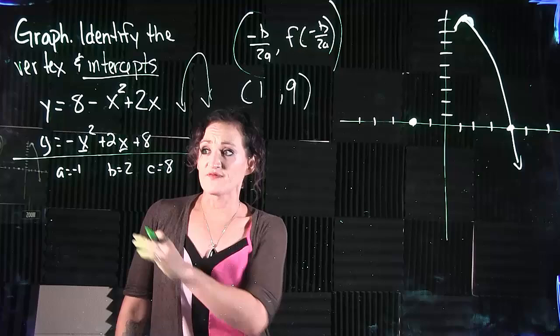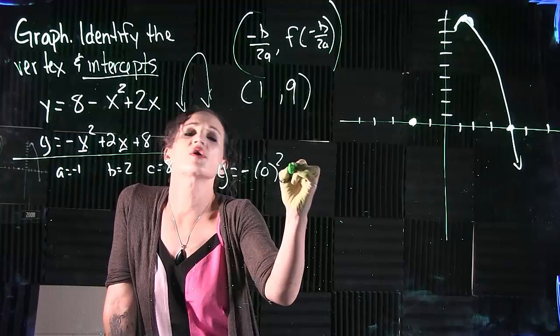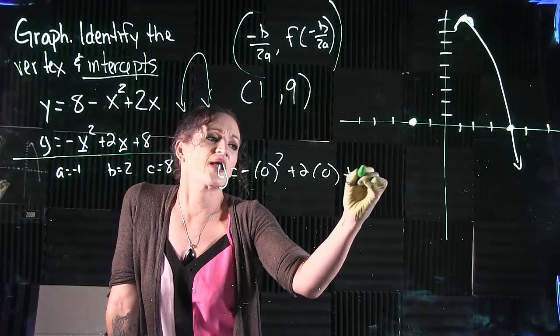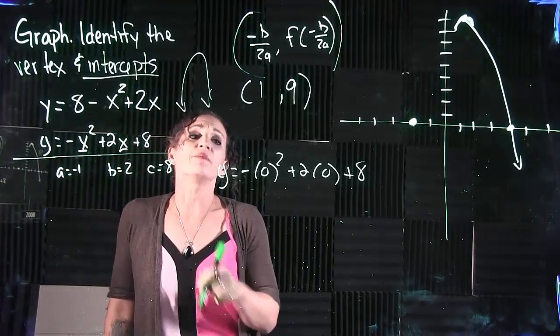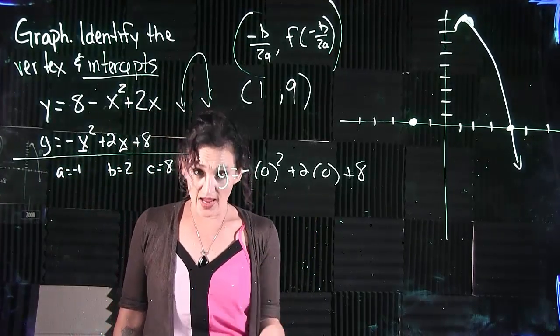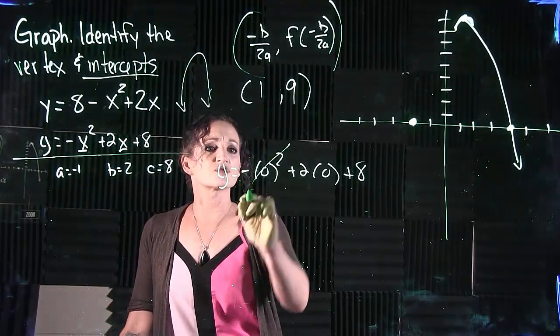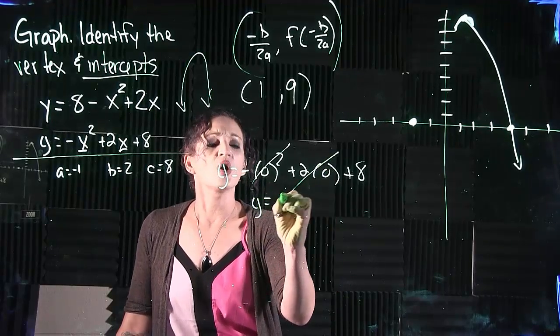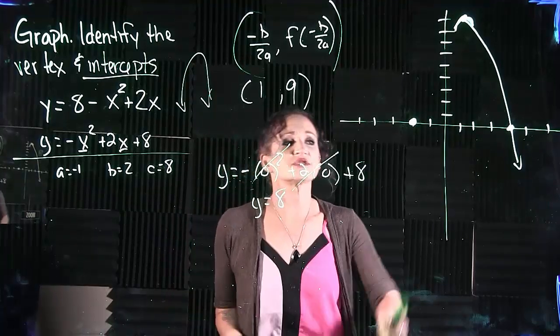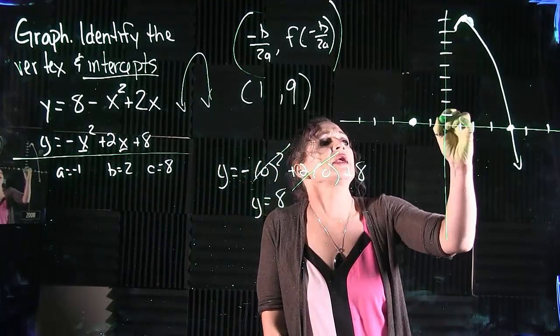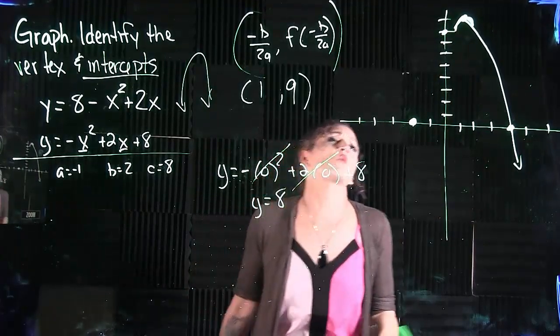In order to find the y-intercept of any function, you want to go ahead and plug in 0 for your x values. So I'm going to go ahead again and use this version of our equation, plug in 0 for x and you should get your y-intercept. So whenever we plug in 0, well 0 squared is 0, 2 times 0 is 0, so we are left with y is equal to 8, which means a positive 8 is our y-intercept. If we go up 8, that is where our graph is crossing that y-axis.